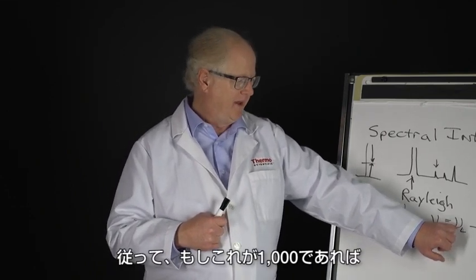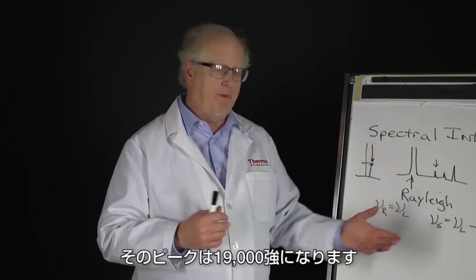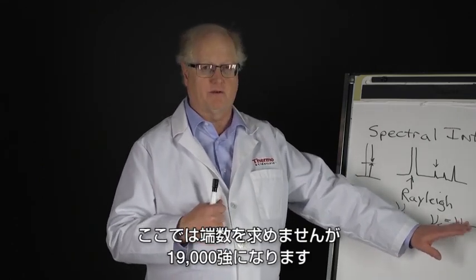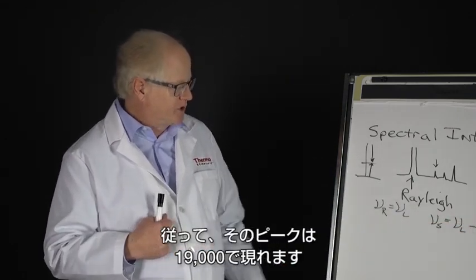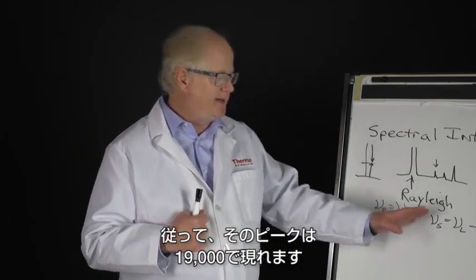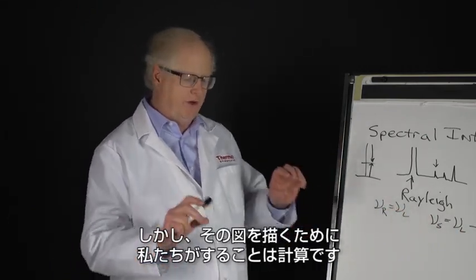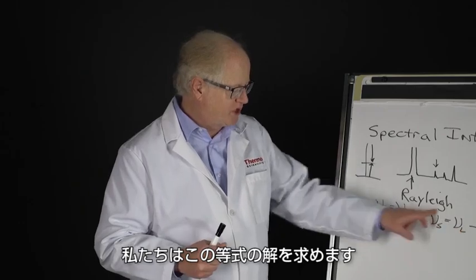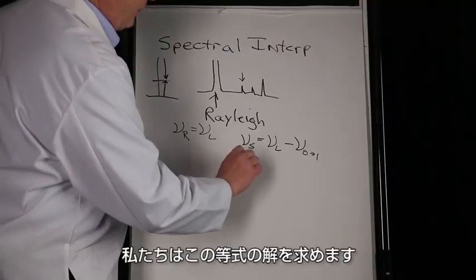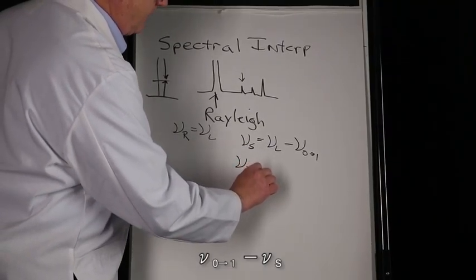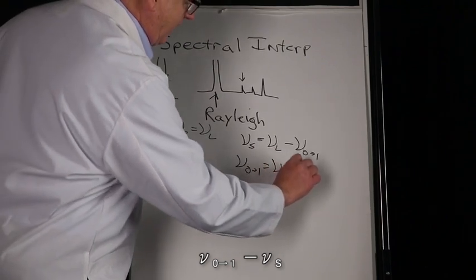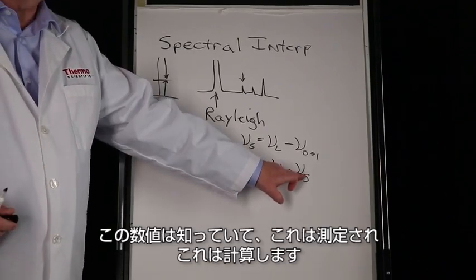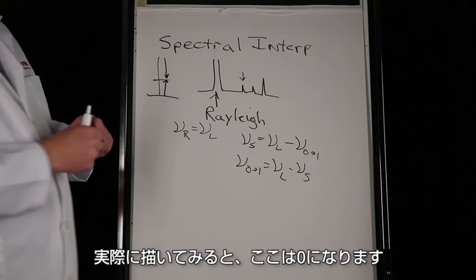Again, you start out with those numbers here. So 20,492.4 - if this is at a thousand, then the peak would appear at 19... it would be at 19,000, whatever that difference is. So you would see that peak at 19,000. But what we do is we actually do the math when we do the plot. We flip it over, so we solve this equation and we solve this equation. And we will say ν_01 is equal to ν_laser minus ν_Stokes. These are the two we know - this is measured. We do the math.